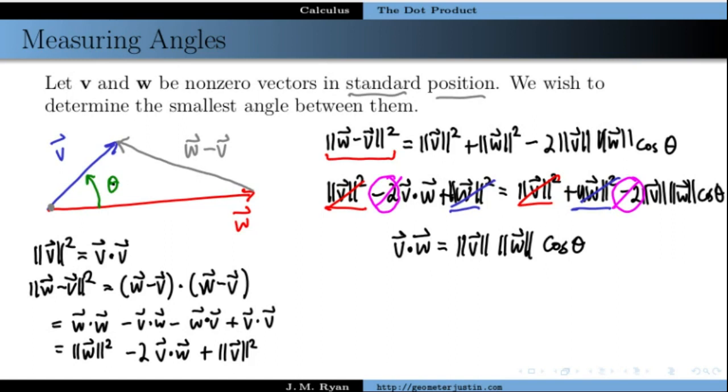Since these vectors were both nonzero, then these two terms, the length of v and the length of w are nonzero, and we can divide. And what we end up with is that the cosine of theta is equal to the ratio v dot w over the length of v times the length of w.